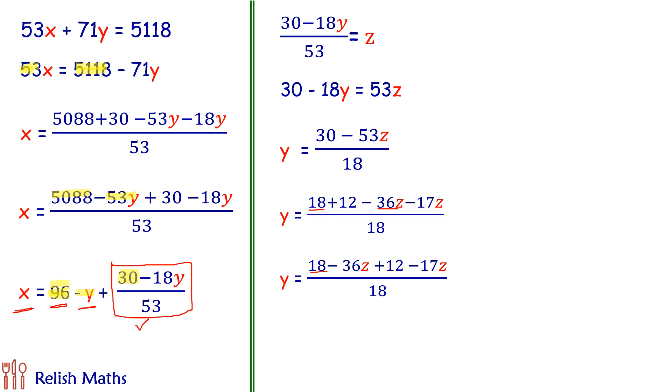So dividing 18 by 18 gives me 1, negative 36z by 18 gives me negative 2z, and these are the remainders which are left, which are not divisible by 18 at present.